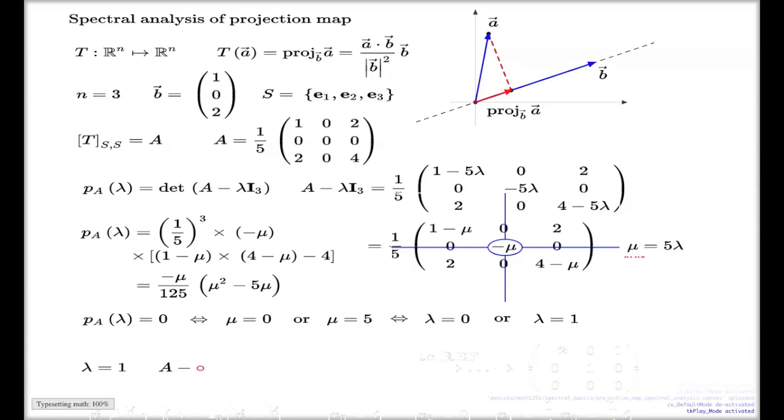When I take matrix A minus I₃, if I take this matrix with lambda specifically being 1, it will be this matrix with μ specifically being 5. So here's my matrix: negative 4, 0, 2 first row; 0, negative 5, 0 second row; 2, 0, negative 1 last row from the same matrix.